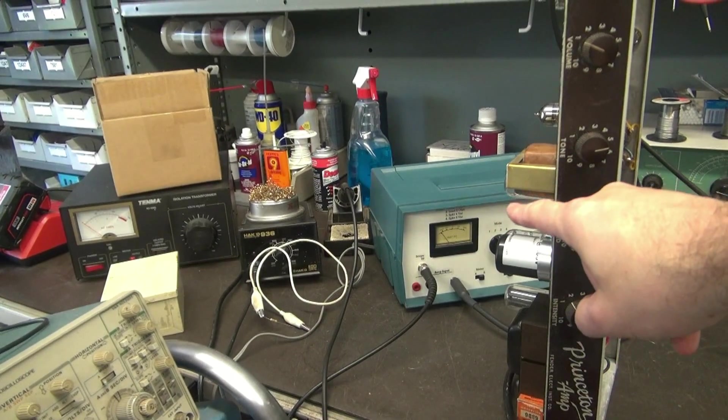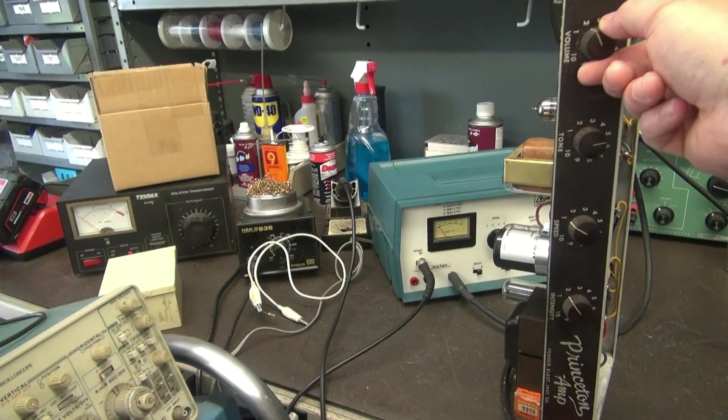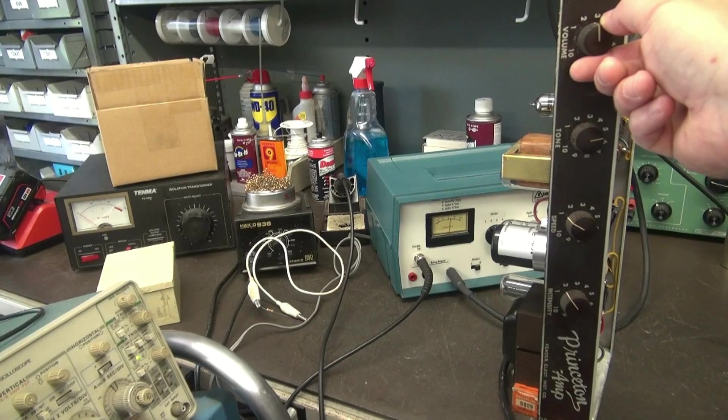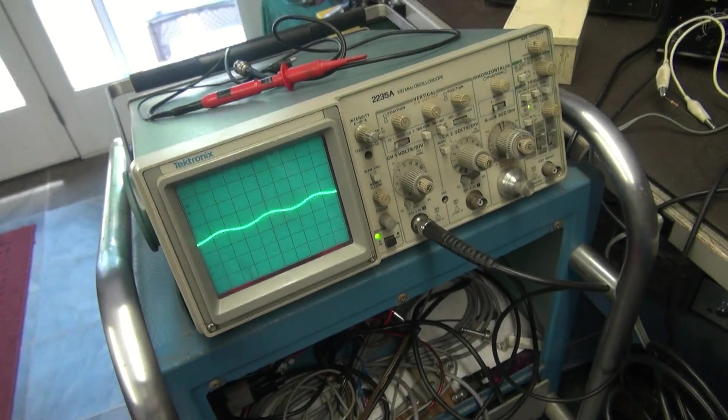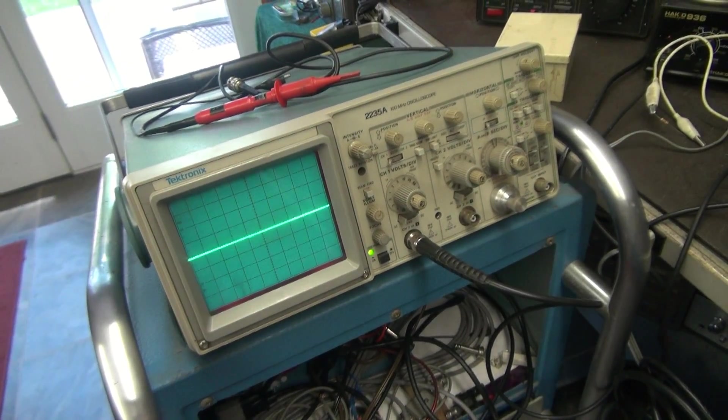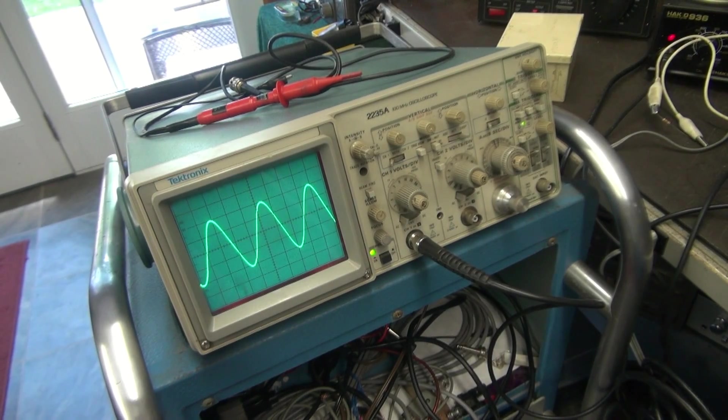So here we go again. Audio test set's hooked up. I'm going to play the volume. You can see the meter over there doing its thing. Let's take a look at the scope. There's a sine wave. That jump, jump, jump's gone.